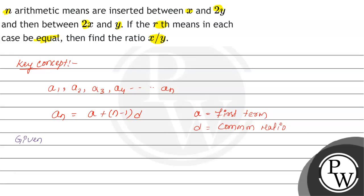So first of all, the given series is a1, a2, a3, and so on up to 2n. The first term is x, which is given, and the last term is 2y. So now we have to calculate the last term 2y using the formula: x plus (n plus 1) multiplied by d1.